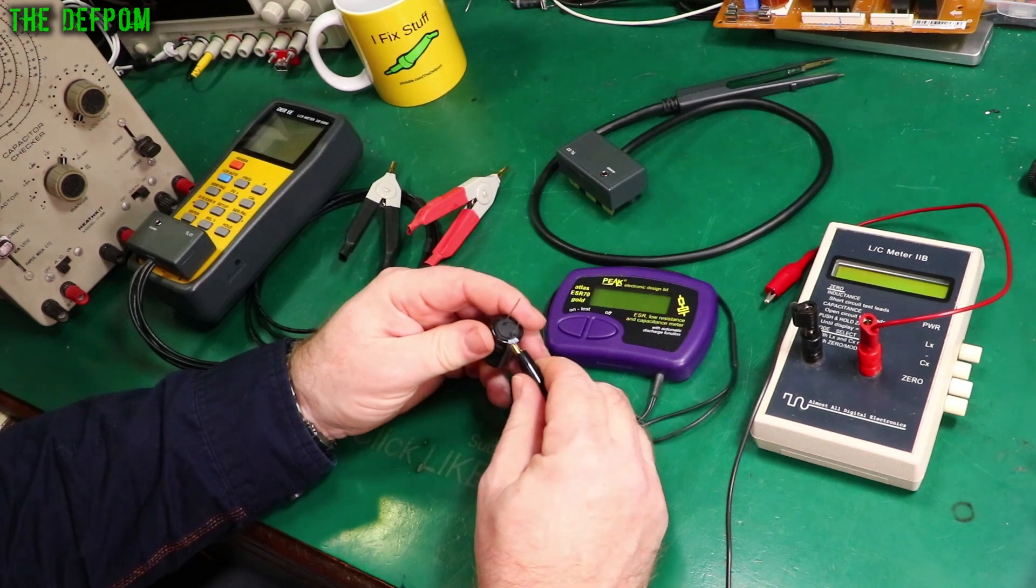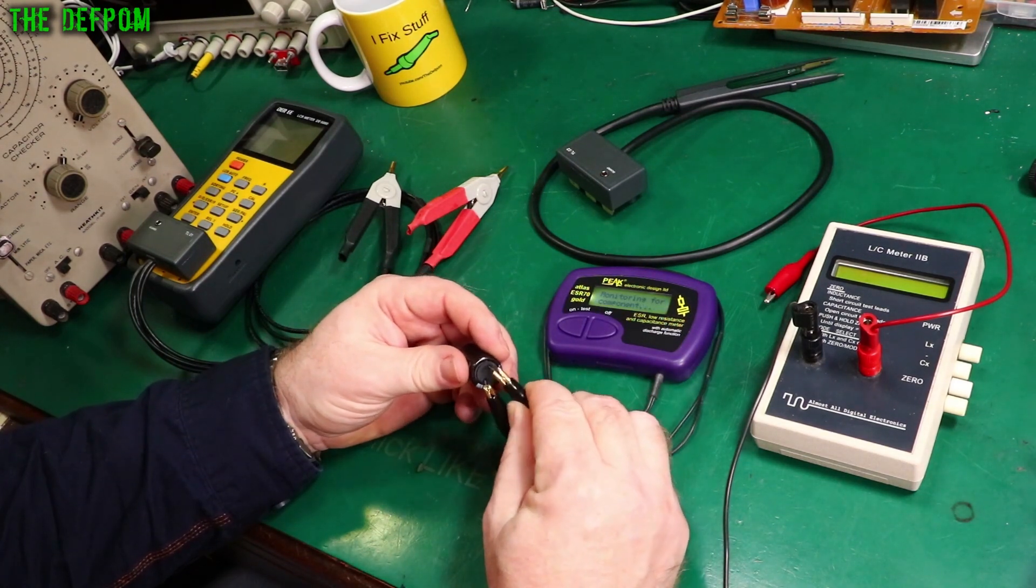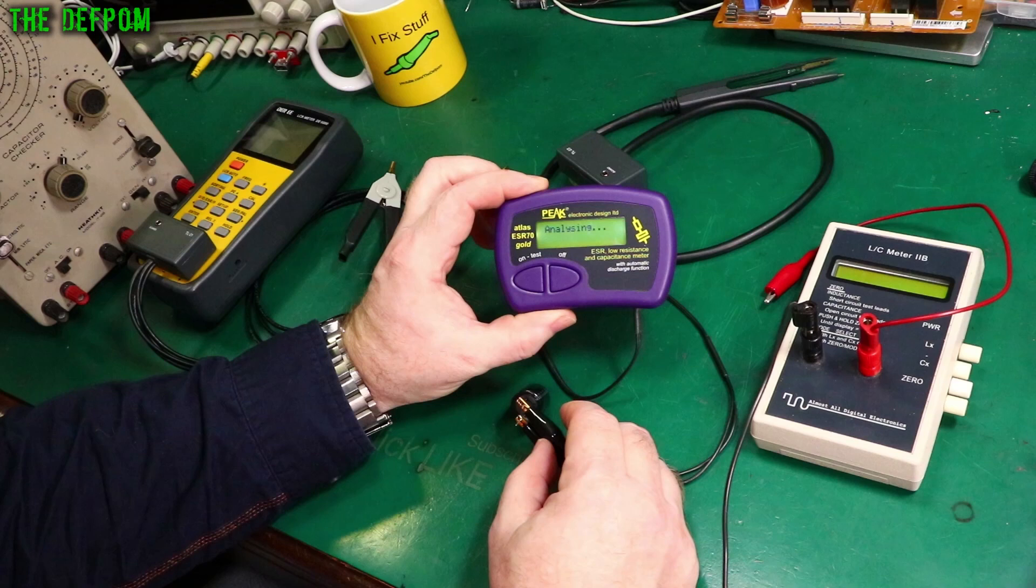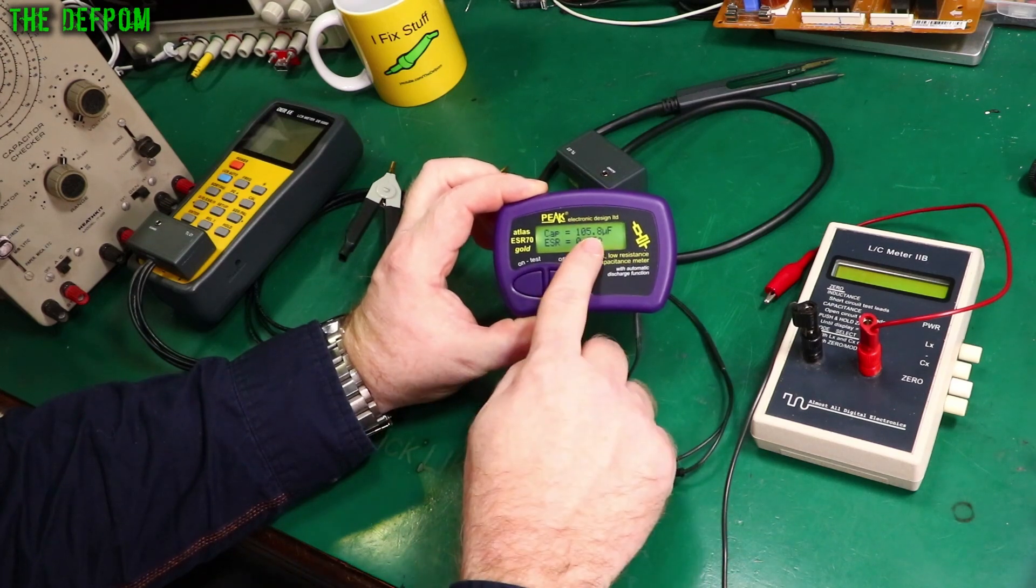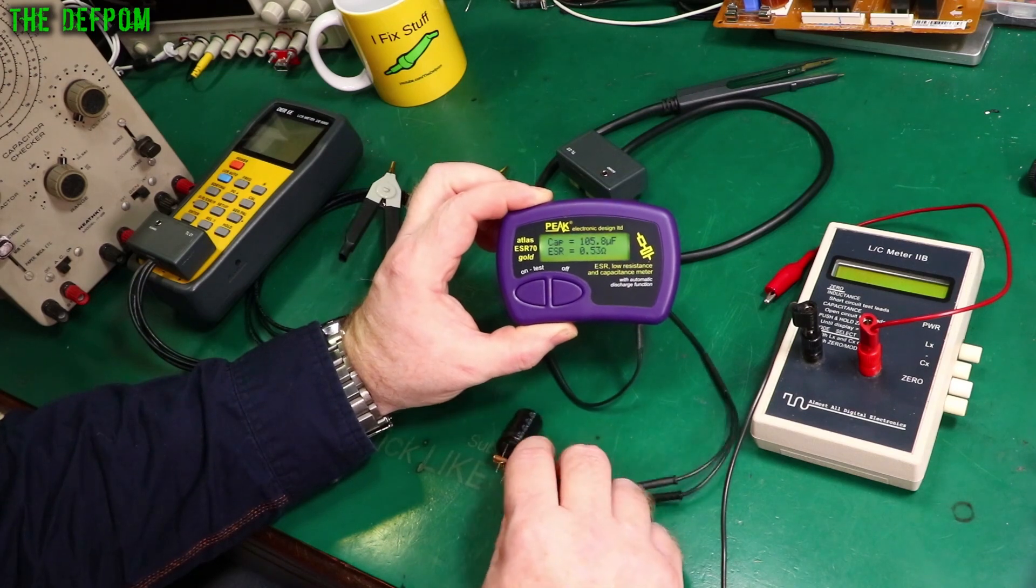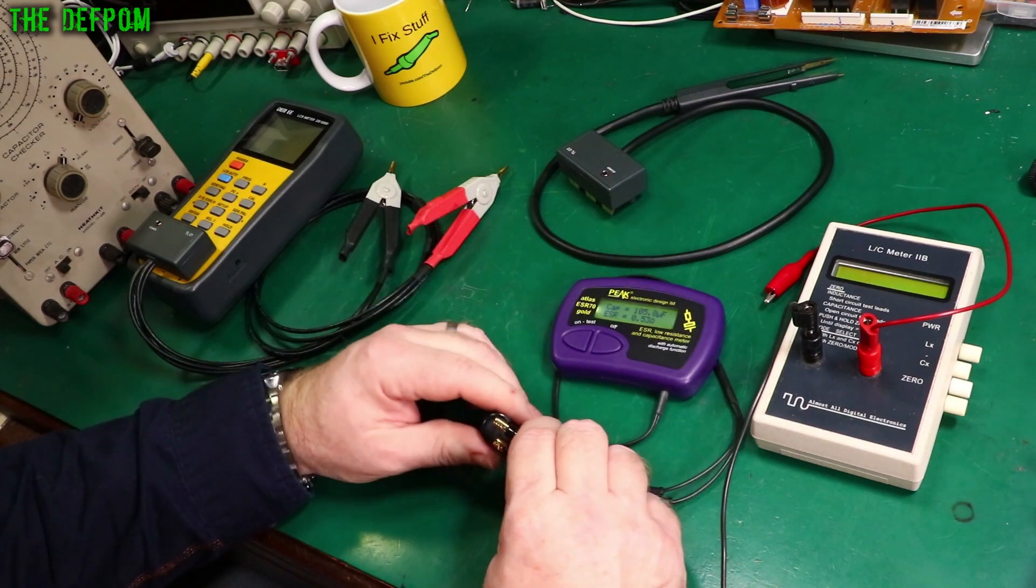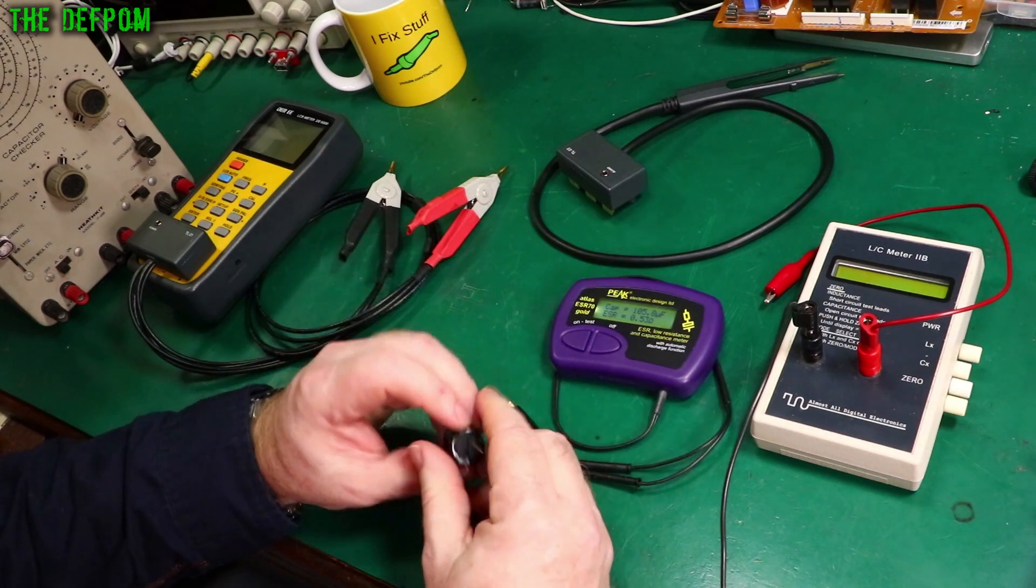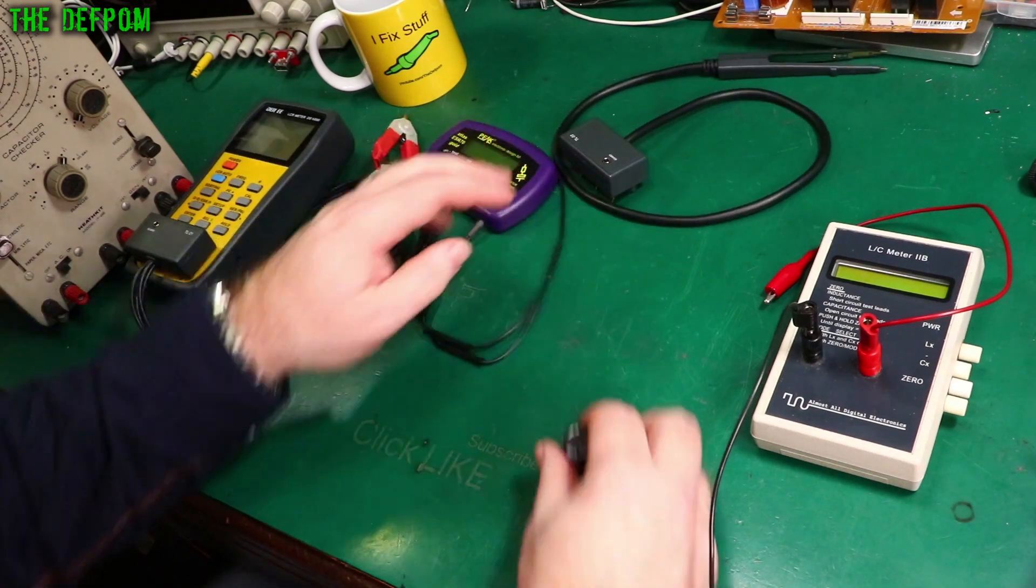Let's look at this one. This is the Peak ESR meter. Let's turn it on. So this is 105.8 microfarads and 0.53 ohms ESR. ESR is an important factor when you're doing repairs. You want to check capacitors are actually performing okay. They're not actually got too much leakage and stuff like that.